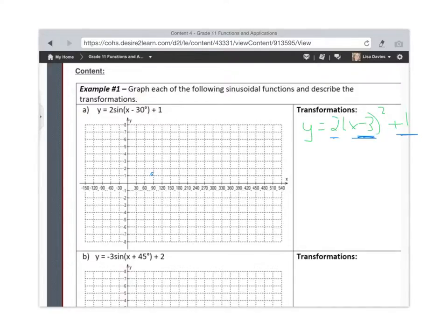by the time you get to 180 you're back to 0, at 270 you're at minus 1, and then by 360 you've gone one full cycle or one period of the graph and so you're back at 0. And so if we connect those with these nice smooth curves we get the original sine function y equals sine x.